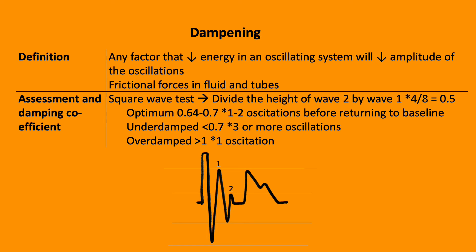Dampening is any factor that reduces energy in an oscillating system, leading to a reduction in amplitude of oscillations. It is due to frictional forces between the fluid and the tube within the arterial line system. This can be tested using the square wave test: squeeze the fast flush valve to cause fluid from the pressurised bag to move through the transducer, producing a square wave. The system then oscillates back to baseline. Optimum dampening produces one or two oscillations.